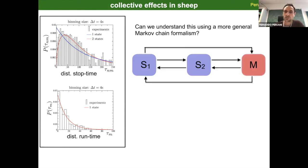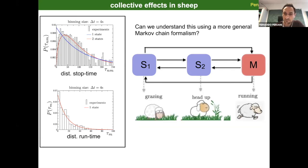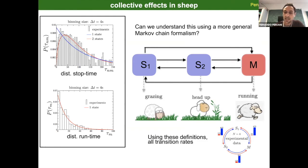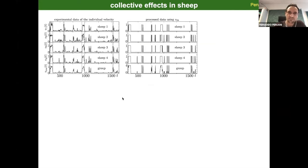Can we understand this using a more general Markov chain formalism? Again the answer is yes. Using the same approach as before, we use three behavioral states — two associated with the stop regime — and this allows us to describe the gamma-shaped distribution. The question is again: what are these states? We say that when the sheep has its head down it is in state S1; when it is not moving but has its head up it is in state S2; and M means it is running.